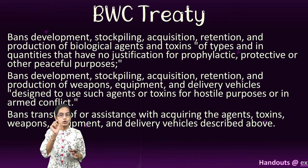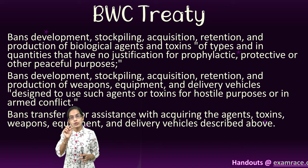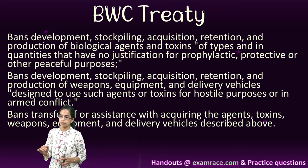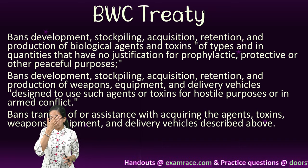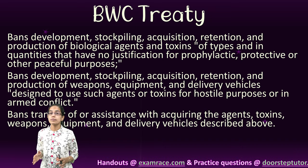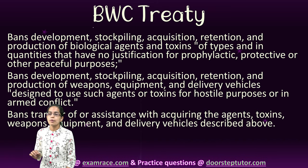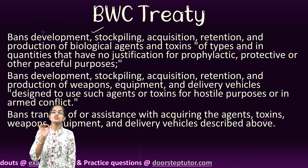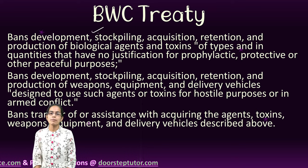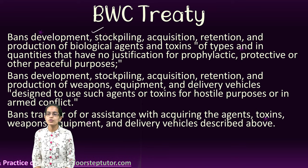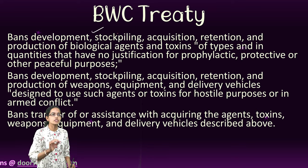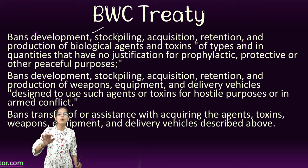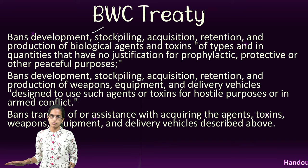The first important treaty was focusing only on biological weapons, no other kind. The treaty basically focused on banning and stockpiling the development of biological agents or toxins which could be used in any form except for peaceful purpose.